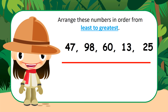First, let's call the numbers: 47, 98, 60, 13, and 25. Can you tell us which number is the smallest? 13 — very good! So let's put 13 as our first number and cross it out since we've already used it. Now what is the next number in the sequence? 25 — very good! Let's cross that one out too. What's the smallest number now? 47 — very good!